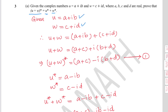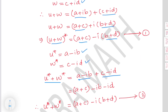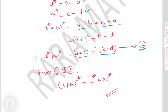U is A plus iB and W is C plus iD, so U plus W is A plus iB plus C plus iD. Collecting real and imaginary terms gives A plus C plus i times B plus D. Therefore the conjugate of U plus W is A plus C minus i times B plus D — call this equation 1. The conjugate of U is A minus iB and conjugate of W is C minus iD, so conjugate of U plus conjugate of W is A plus C minus i times B plus D — equation 2. Comparing equations 1 and 2, the conjugate of U plus W equals the conjugate of U plus the conjugate of W.